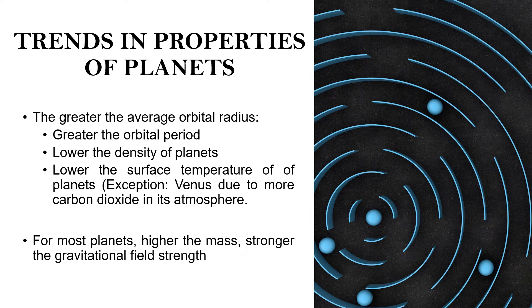The outer four planets — Jupiter, Saturn, Uranus, and Neptune — have much lower densities as they are made of gas. Lower surface temperature is another trend: as you go further out, the planets absorb lesser energy from the Sun. An exception is Venus, which has a higher temperature than Mercury because it has more carbon dioxide in its atmosphere.